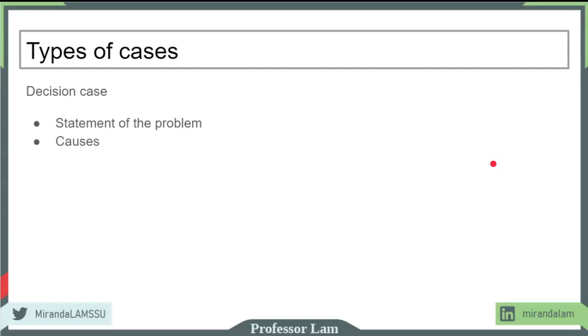For a decision case, it's important to identify the problem. The problem usually involves a decision you or the protagonist has to make. You are trying to help the protagonist. You want to identify the problem, identify the causes of the problem—why is there a problem? You want to list alternative solutions.